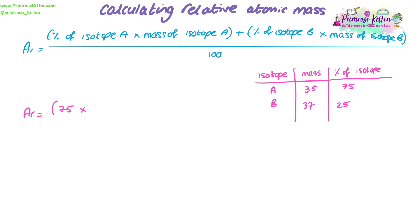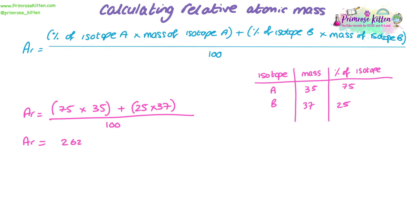In this table I've given isotope A and isotope B with their masses and percentage abundances, and we're going to calculate the relative atomic mass. We do: (75 × 35) + (25 × 37), divided by 100. That gives us 2,025 plus 925, divided by 100, which equals 35.5. It's important to remember that the mass number on the periodic table is the relative atomic mass — it takes into account all the isotopes of an element and their percentage abundances to give an average mass number for all atoms of that element.